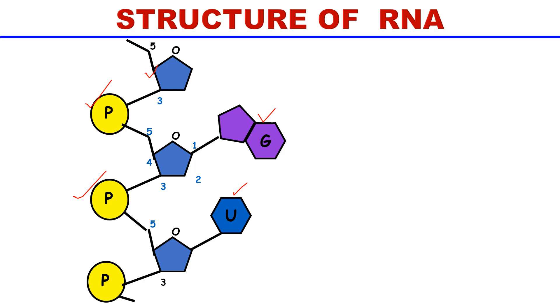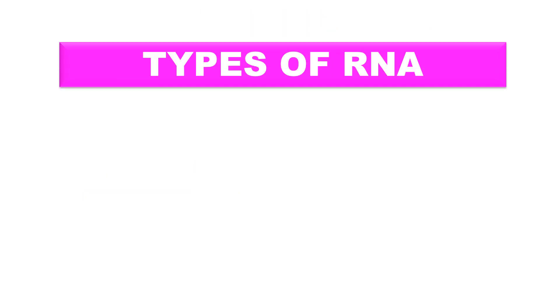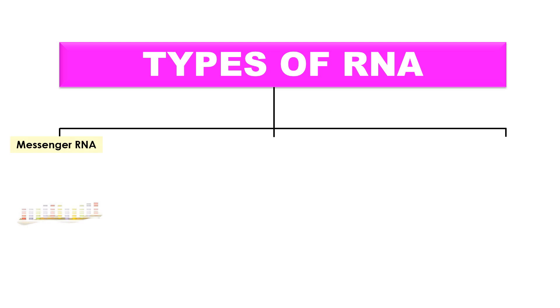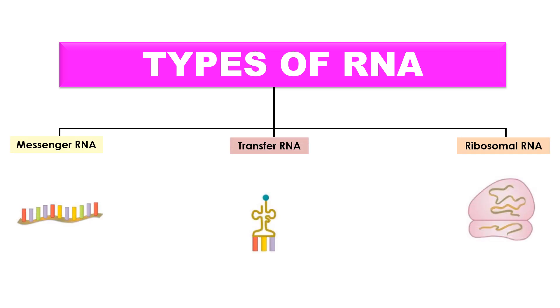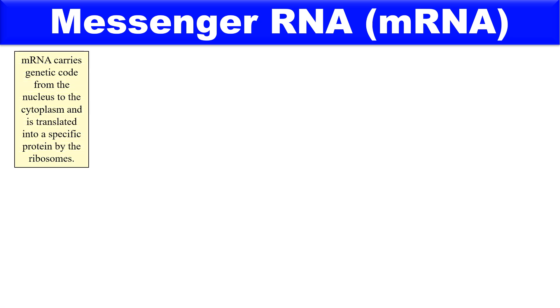There are generally three types of RNA: messenger RNA, transfer RNA, and ribosomal RNA. First is messenger RNA, which is a single-stranded polynucleotide. It forms three to five percent of the total RNA content. Messenger RNA carries the genetic code from the nucleus to the cytoplasm for the synthesis of protein — hence it is named messenger RNA.